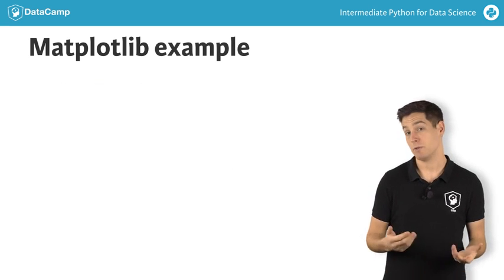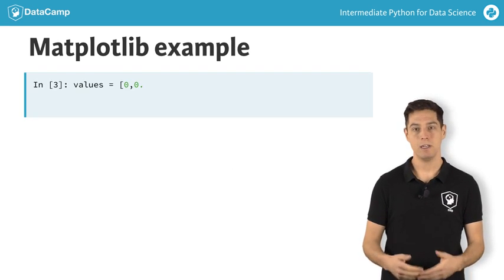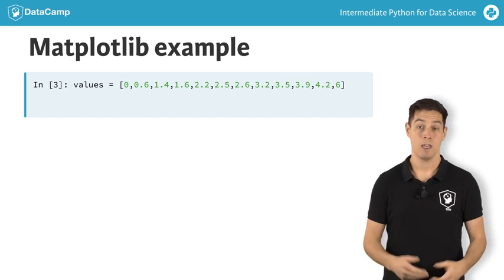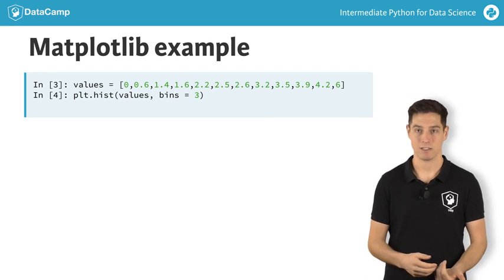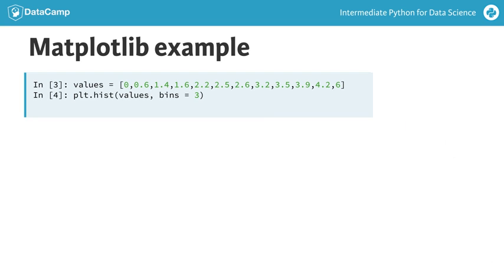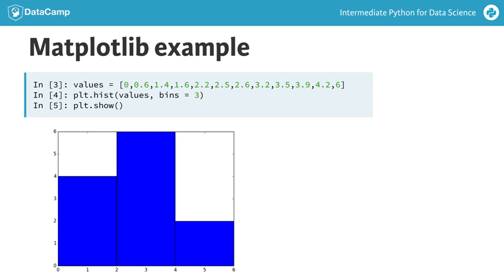So to generate the histogram that you've seen before, let's start by building a list with the 12 values. Next, you simply call hist and pass this list as an input, so it's matched to the argument x. I also specified the bins argument to be 3, so that the values are divided in 3 bins. If you finally call the show function, a nice histogram results.